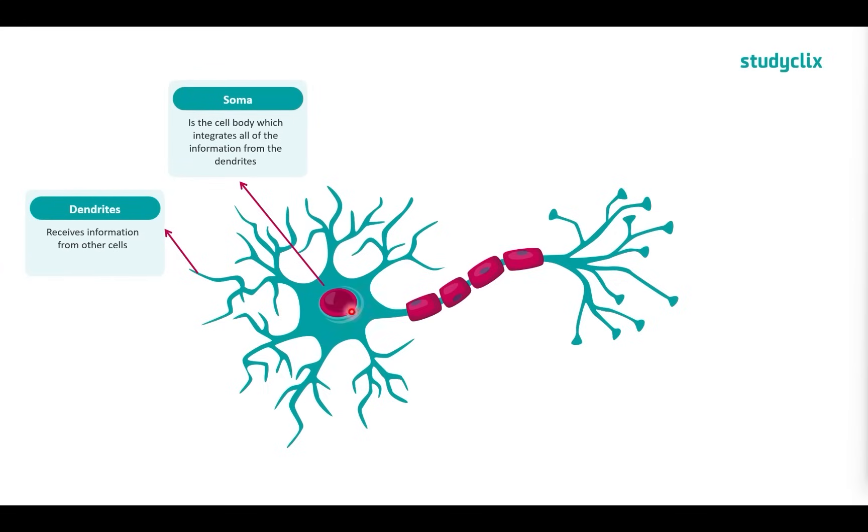Now if we look at the circle here in the middle, this is what we call the nucleus. So this contains the genetic information and helps to keep the neuron alive and functioning.